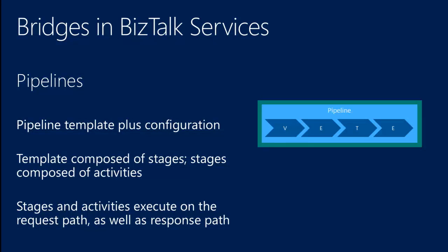Think of stages as representing the intention of processing within that piece of the pipeline. This picture represents a pipeline template with four stages — VETE. The V stage is Validation, so whatever activities you put within the stage are going to validate your messages. Then there's Enrich, which enriches the message with properties either from data from the context or the environment where the message was received — for example the FTP file name. T is Transformation — XML transform is one type of activity shipped within the transform stage — and then there's another Enrich after transform. This picture represents a one-way pipeline. We also have two-way pipelines which execute in two-way bridges, with stages on both the request and response sides.